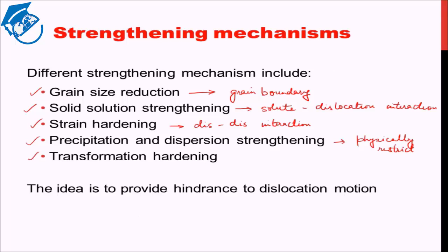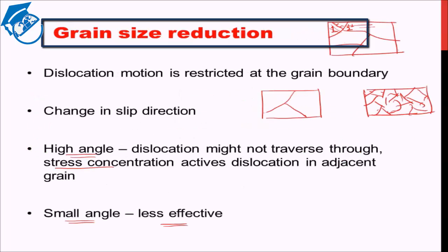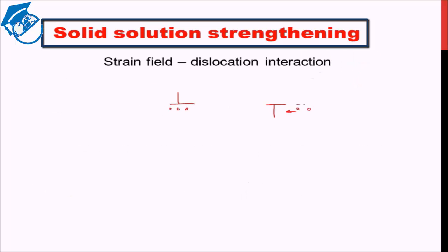Let's recap what we saw in today's lecture. We saw the different strengthening mechanisms possible to increase the strength of a material. We discussed grain size reduction — how reducing grain size leads to increased strength because more grain boundaries means more restriction to dislocation motion. We also covered solid solution strengthening, where solute particles pin down or repel the dislocation. Next lecture will further drill down into the other methods of increasing the strength of a material. Till the next lecture, have a great day. Goodbye.